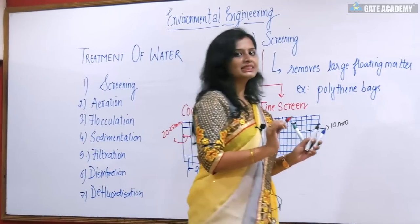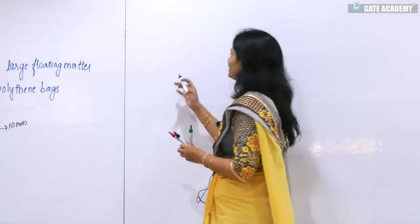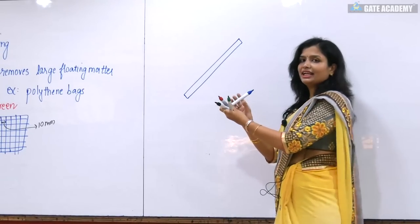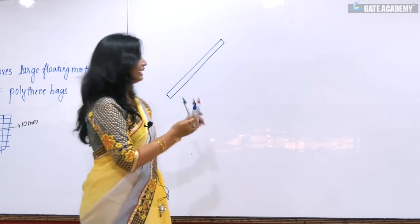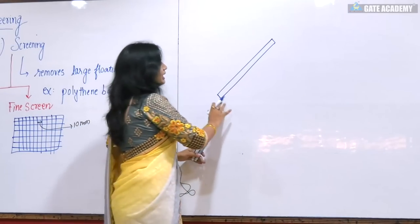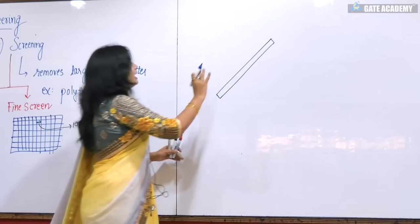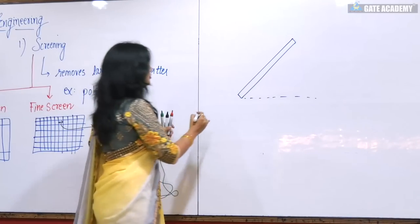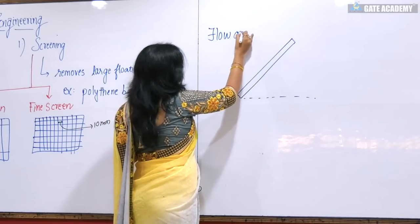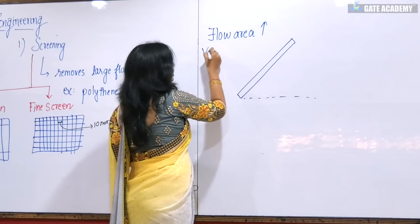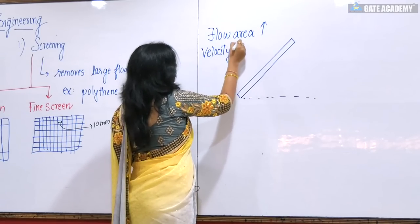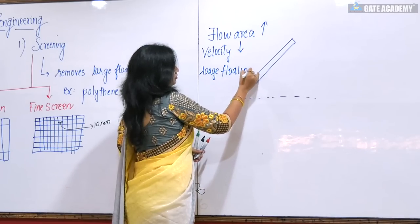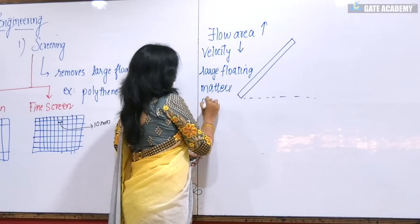How is the screen placed during the treatment of water? Screens are generally placed inclined to the flow of water. The logic of placing it in an inclined manner is that the flow area will increase, velocity reduces, and because of this large floating matter could be collected.